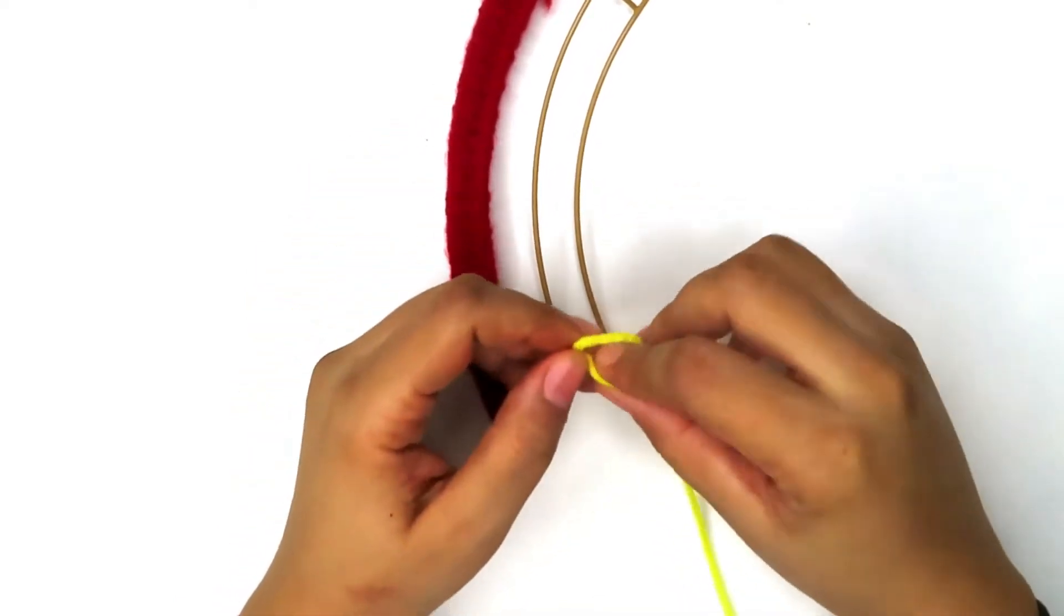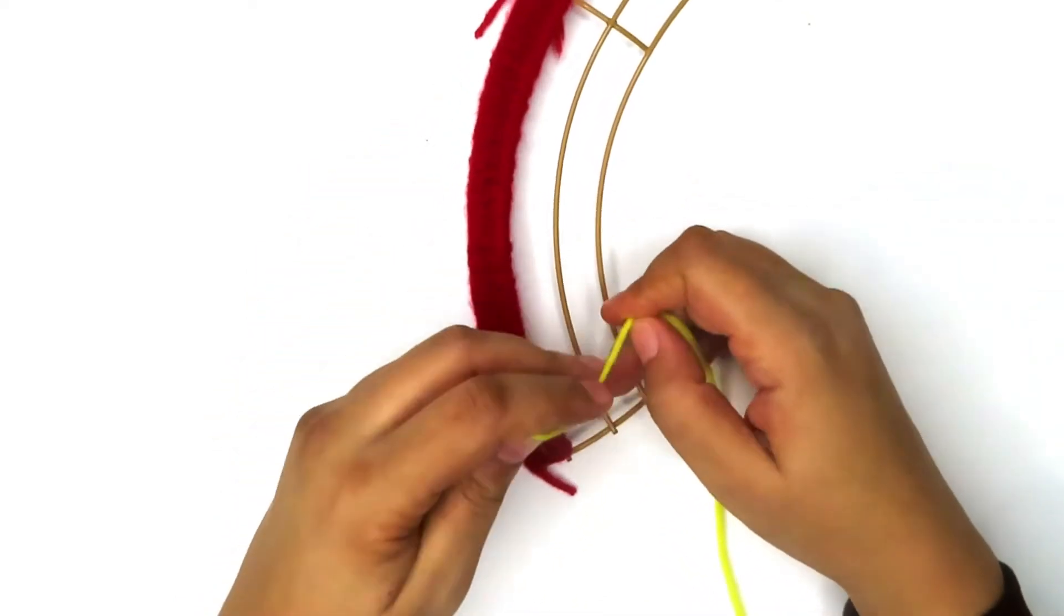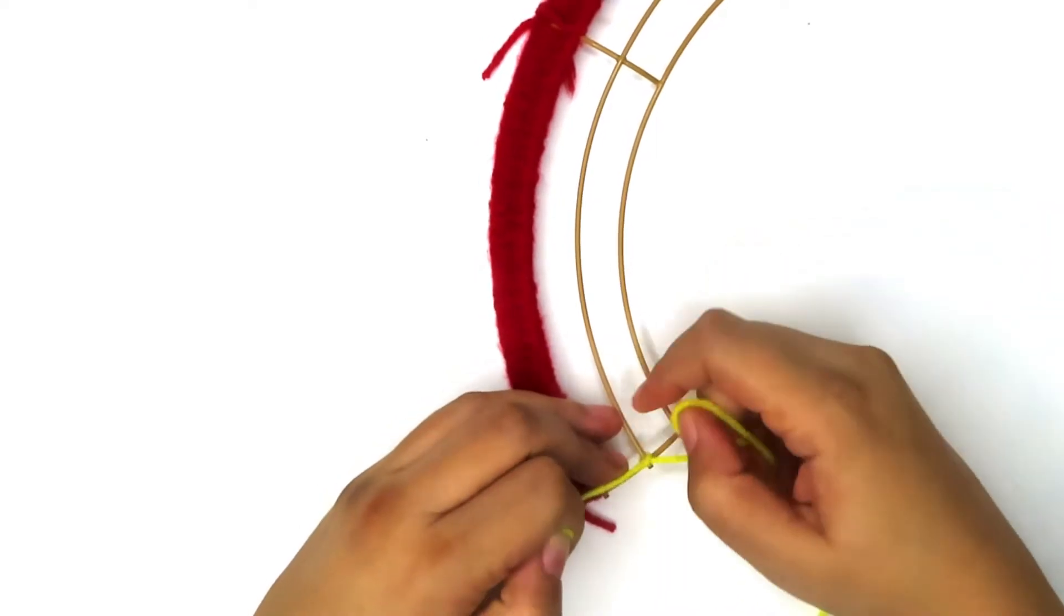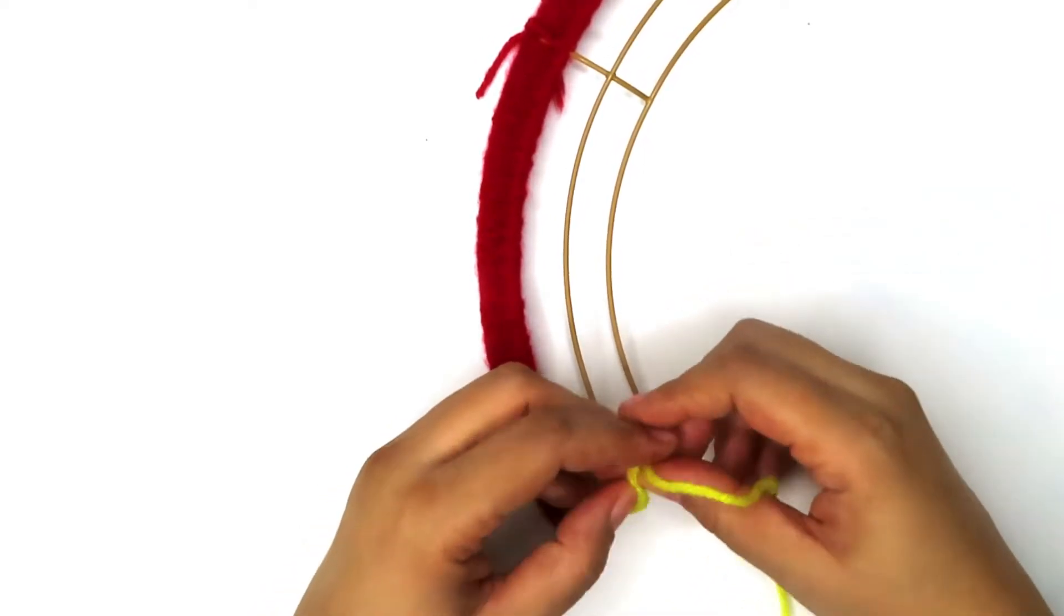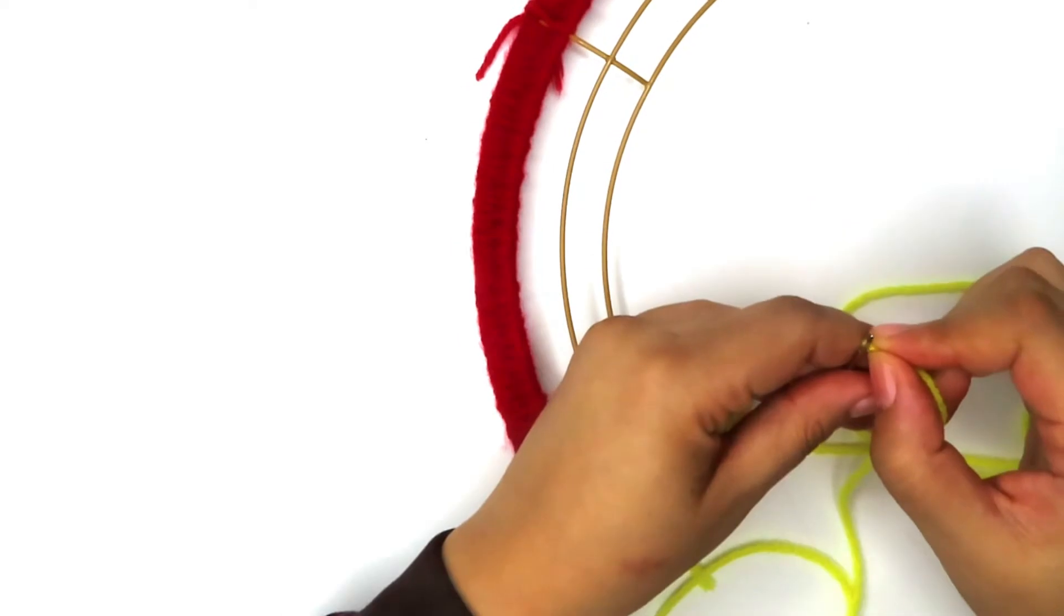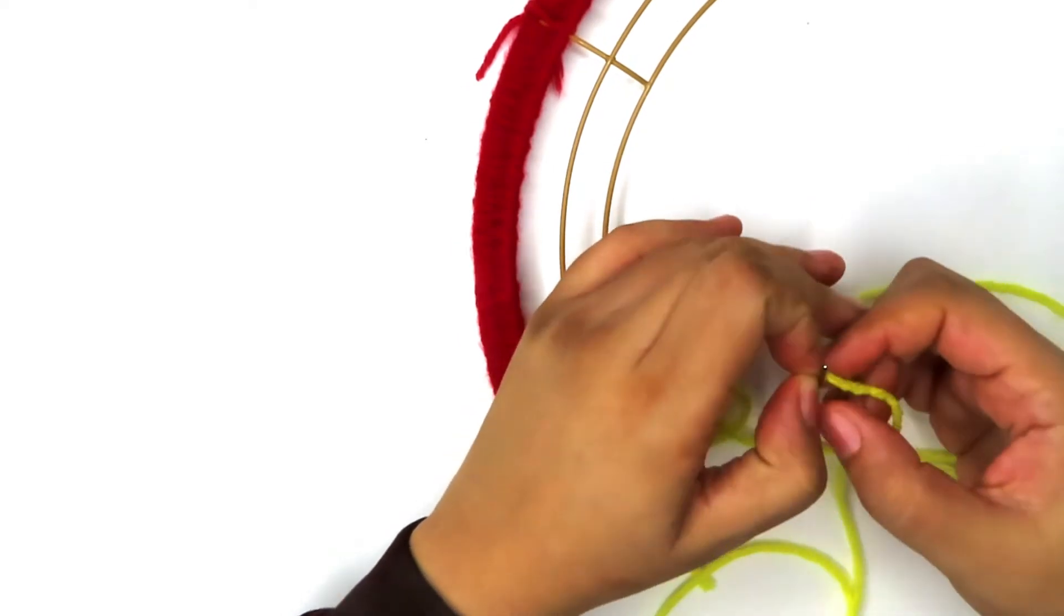To do the second row of the rainbow, you're going to need to tie a double knot around the third hole in the rainbow wreath. And on the other end of that yarn, you're going to thread it through a large yarn needle.